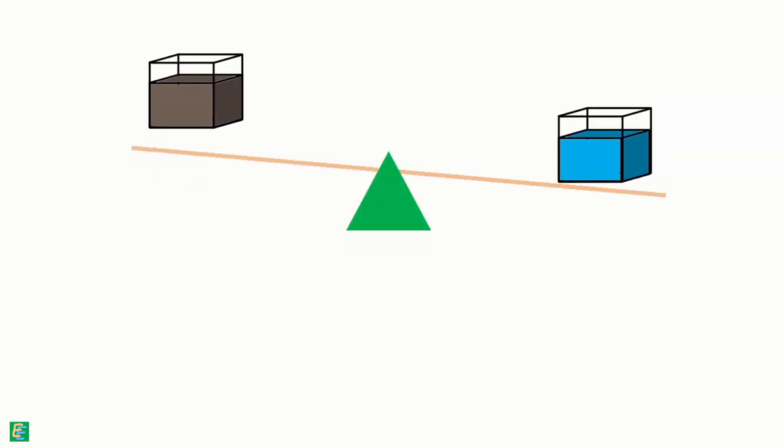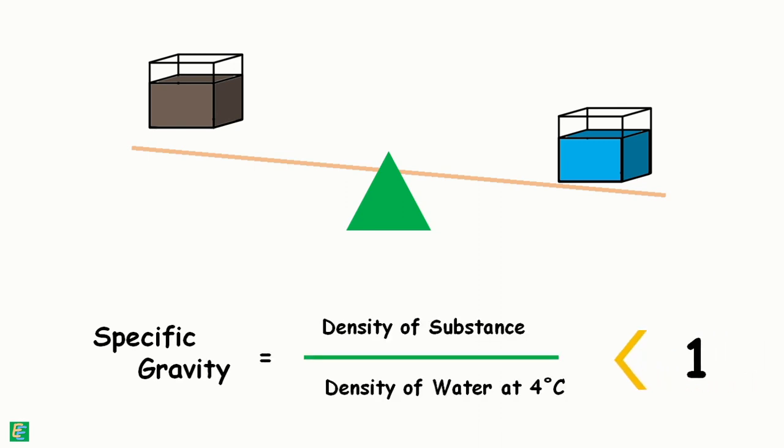If a substance has lower density than water, which means the substance is lighter than water, then the ratio specific gravity will become less than 1 because the numerator is smaller than the denominator.